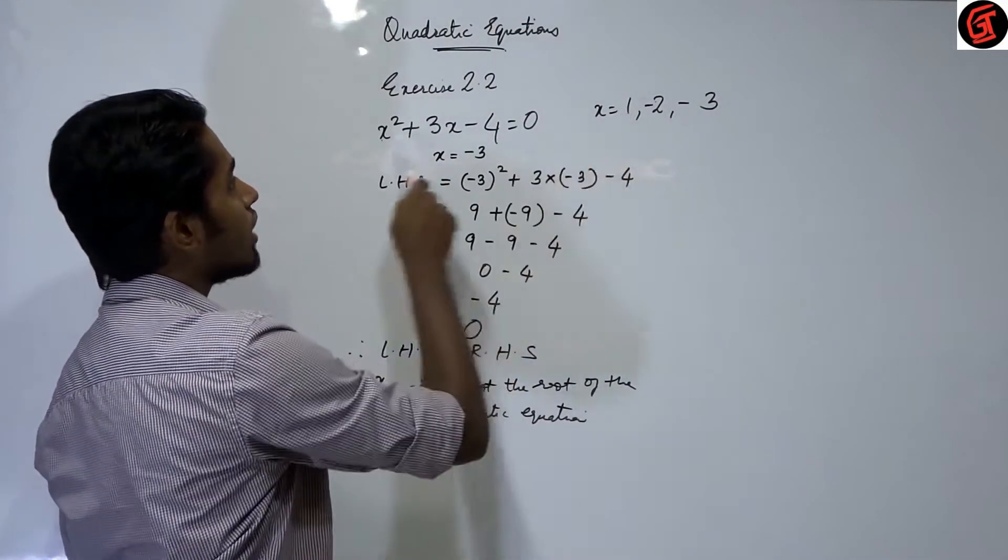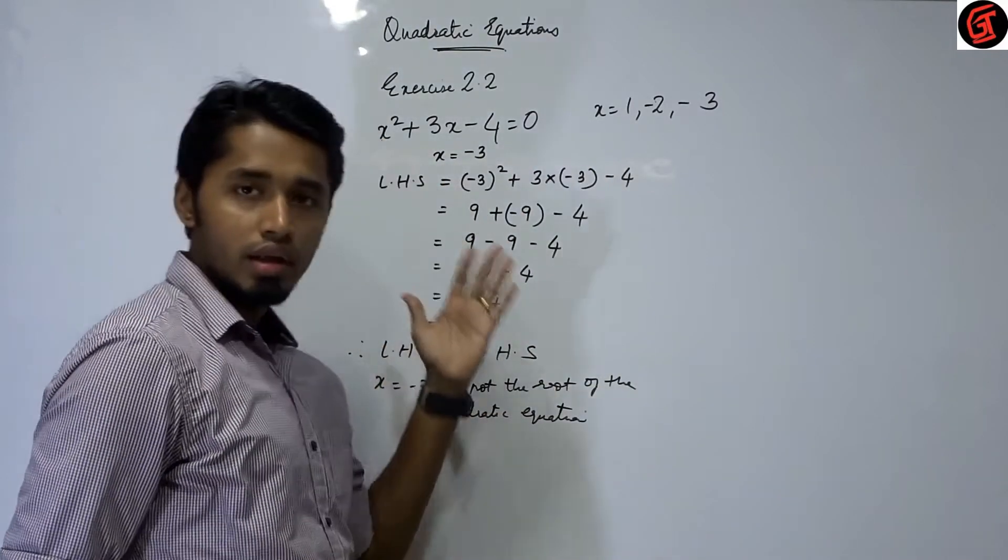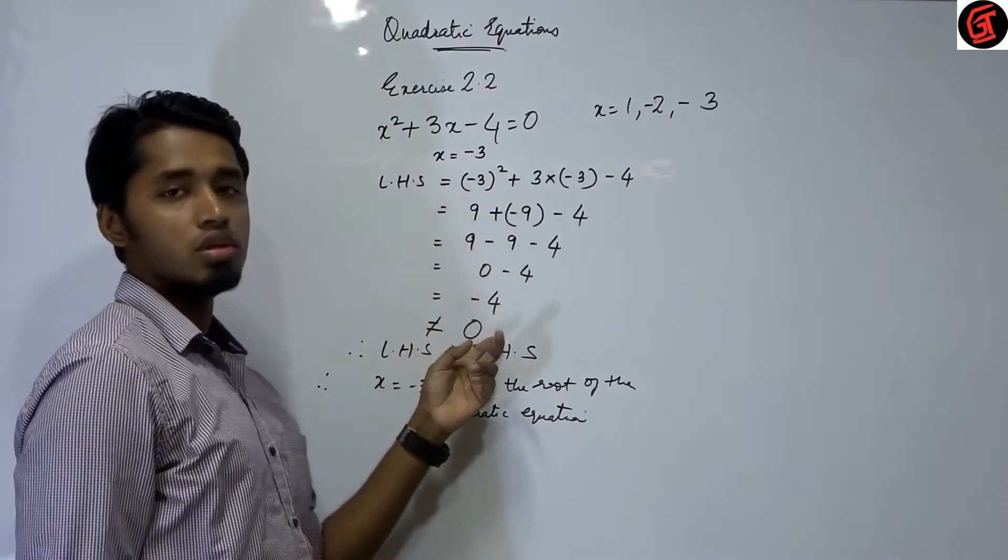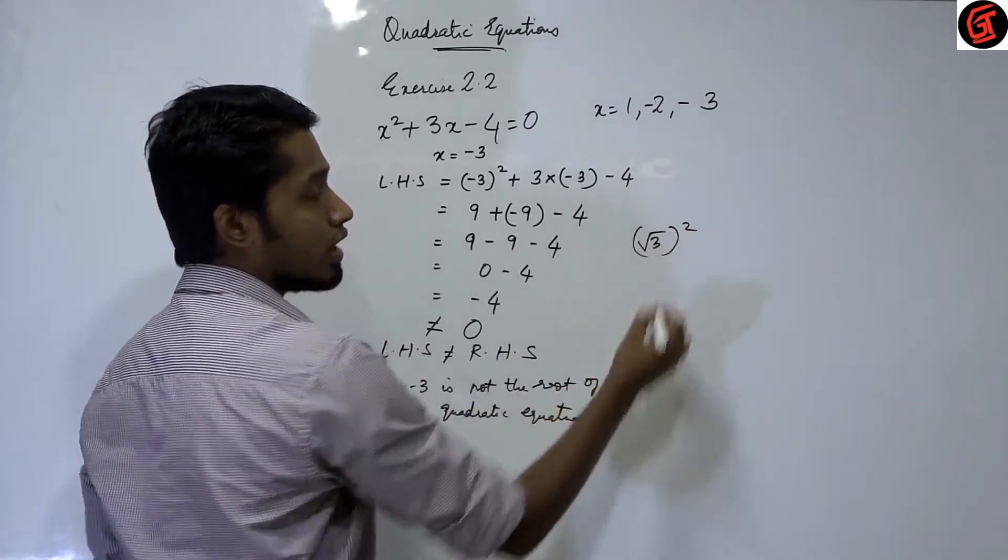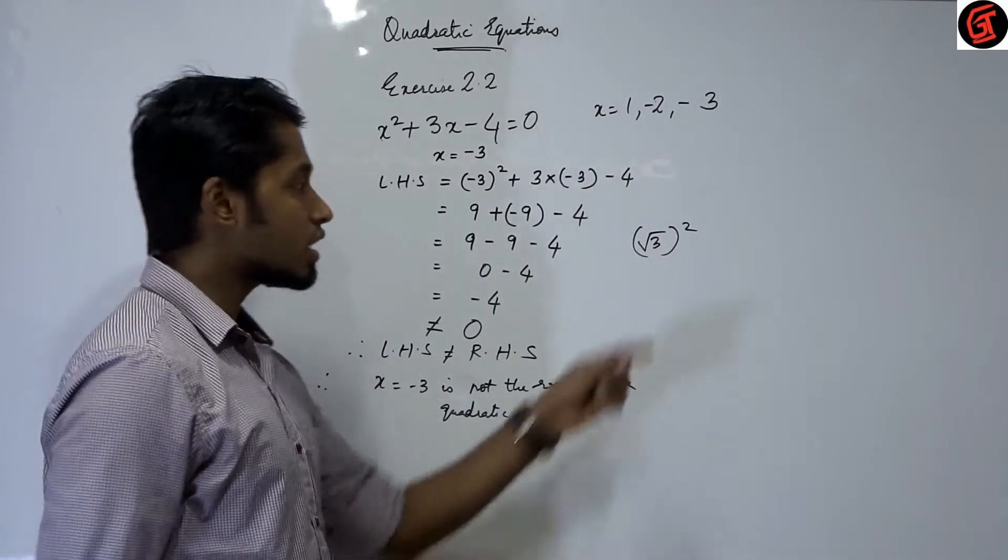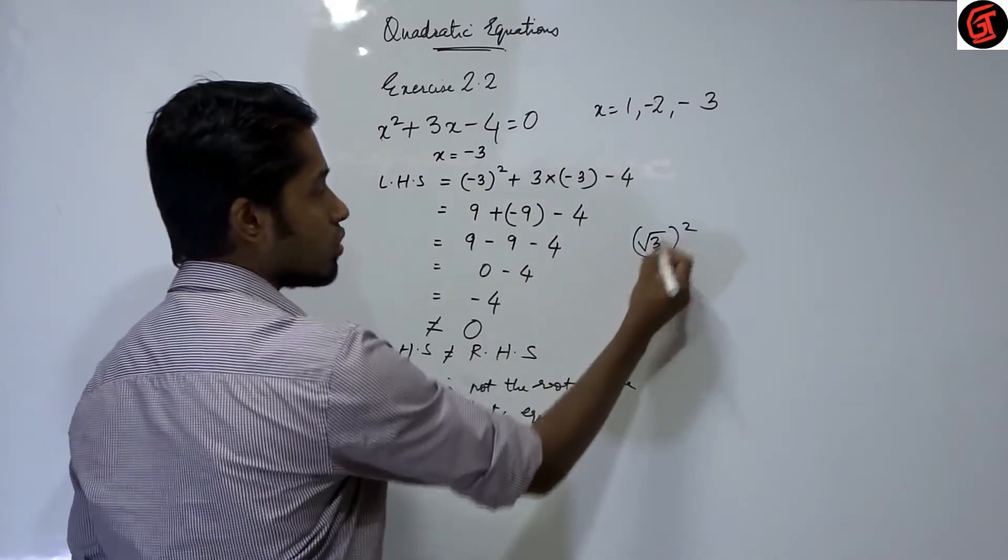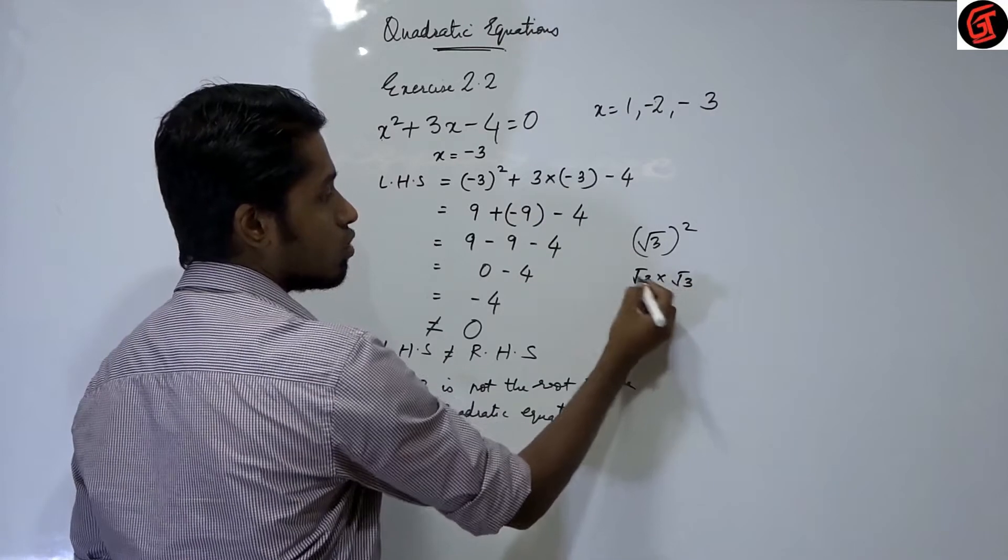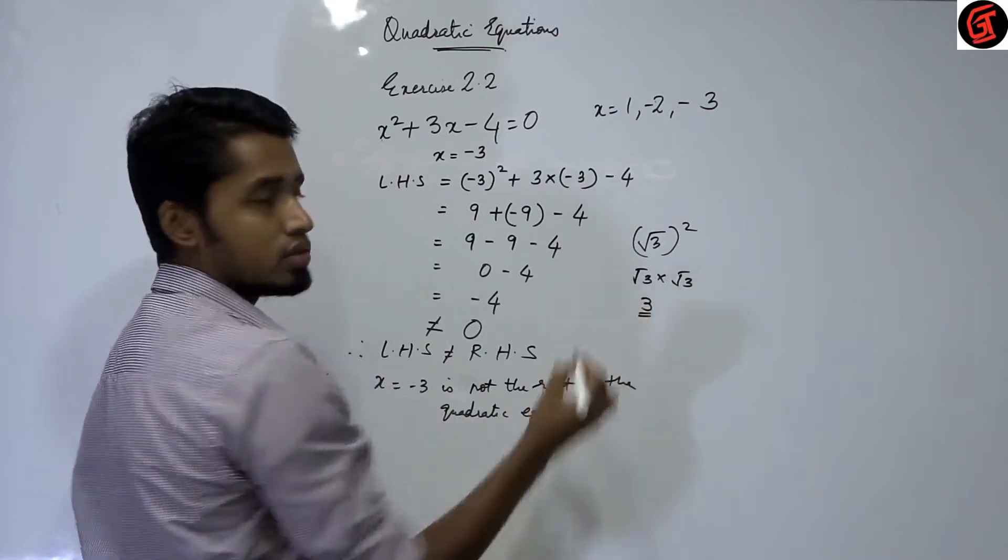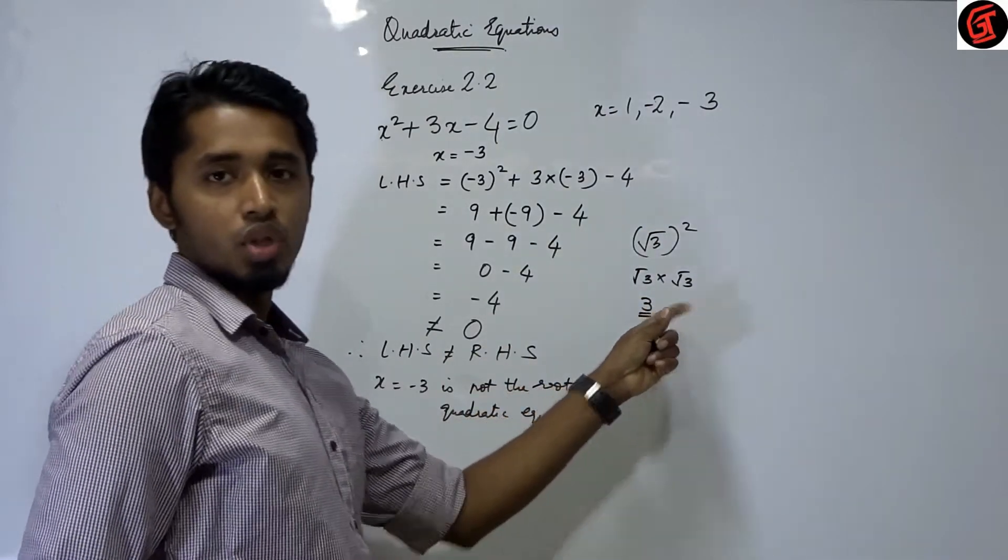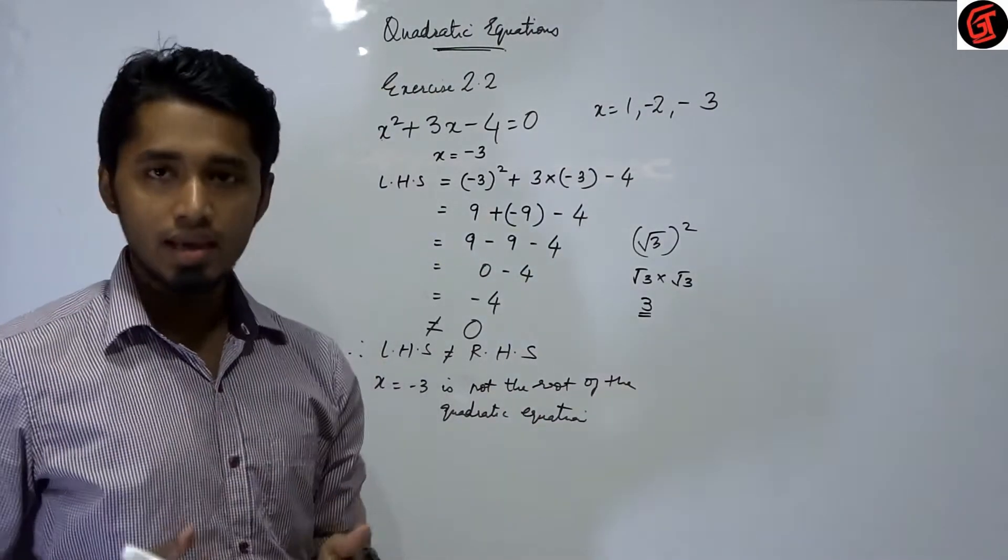Even all the other sums, you have to do it in the same method. Just find out the square of this. If there is a square, you have to find the square, substitute and multiply. All will be quadratic equation. You will get an example like root square. If it is root 3, root 4, root anything, you know root square is root 3 into root 3. Root into root is only the number itself. So root 3 into root 3 is only 3. So if it is root 3 square, it is only 3. I hope you have understood the first part of this exercise.